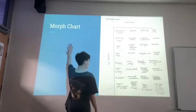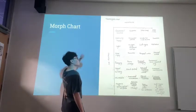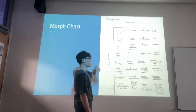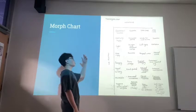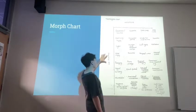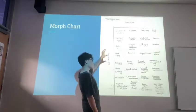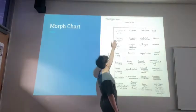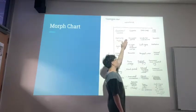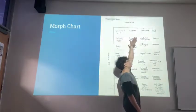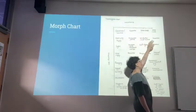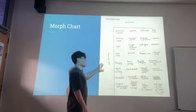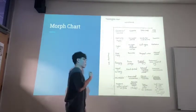Here is our morph chart, as you can see. Here are the sub-functions and solutions. Each of us came up with each solution set. We need the sub-functions requirement. For example, for the convenience, we chose cup-ups, void deck, and the HDB roof.